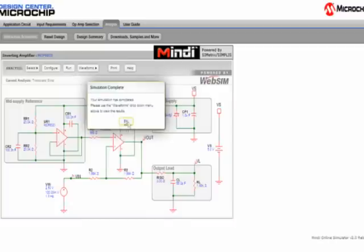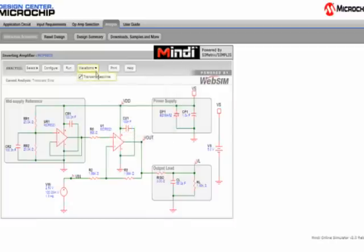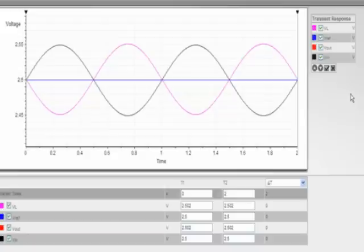We will now look at the transient response under the waveform button. The graph simulates the performance of the MCP6021 when configured as an inverting amplifier.